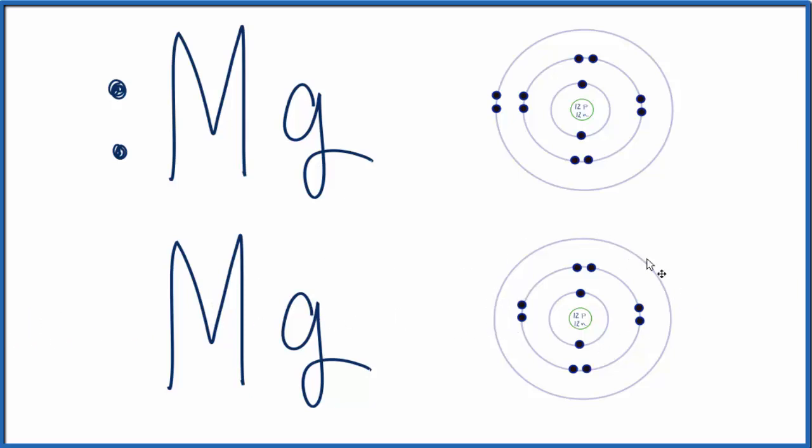and now we've got nothing in this highest energy level, so let's get rid of that as well. Since we've lost those 2 electrons, the charge on Mg now becomes 2+. This is a good way to write the Lewis structure for the Mg2+ ion.